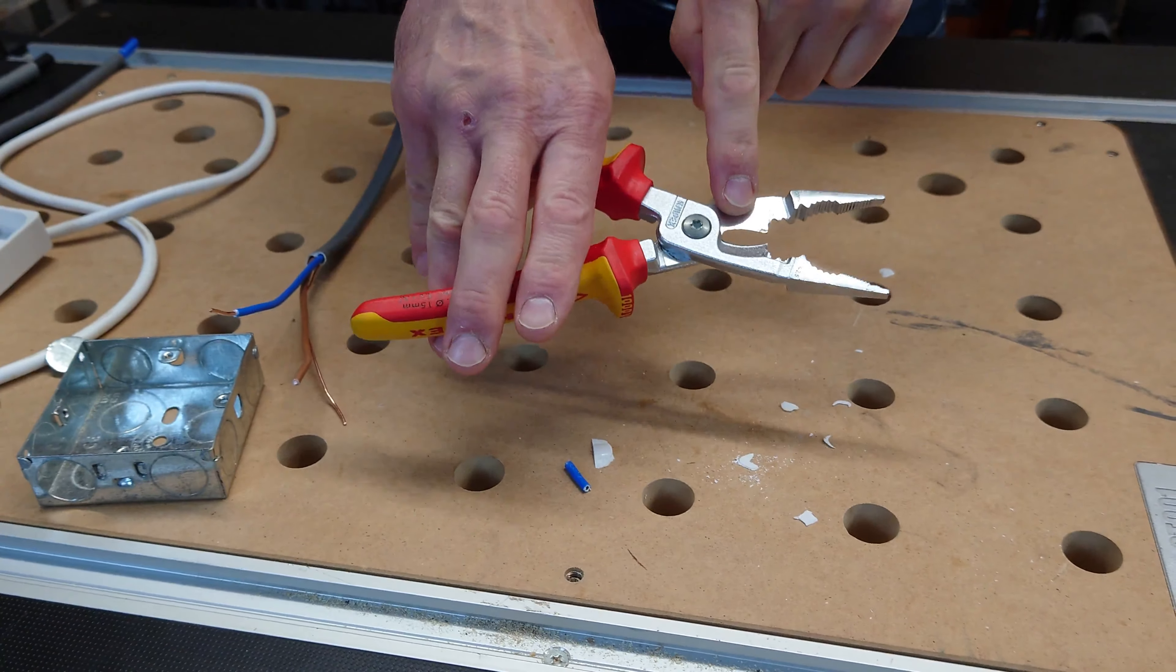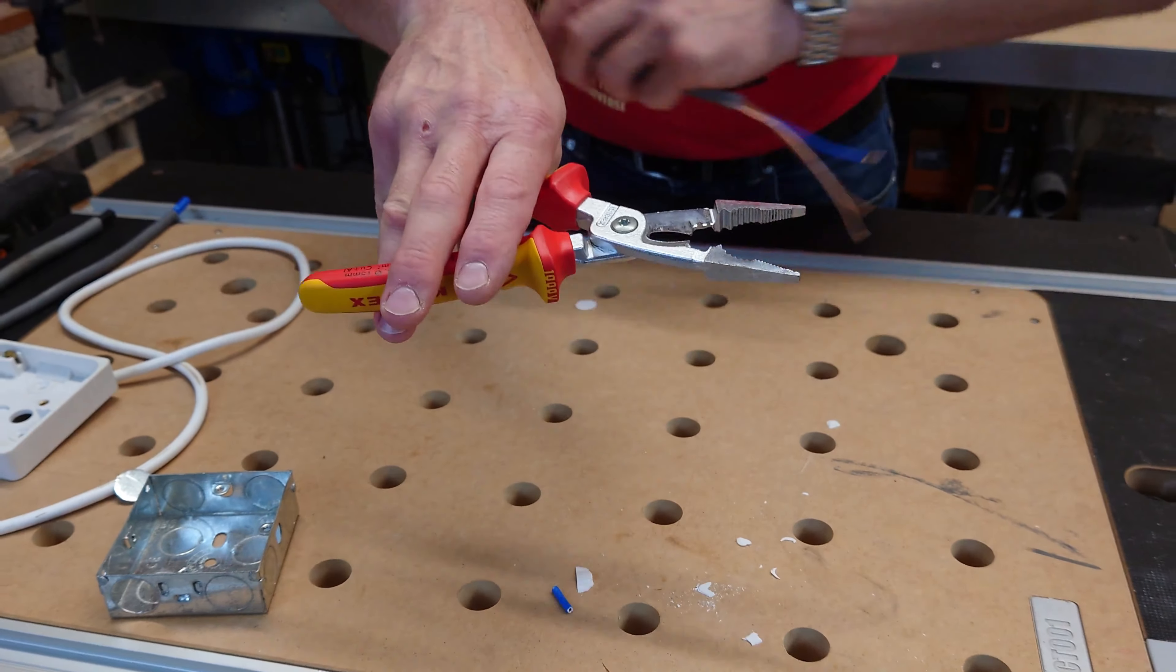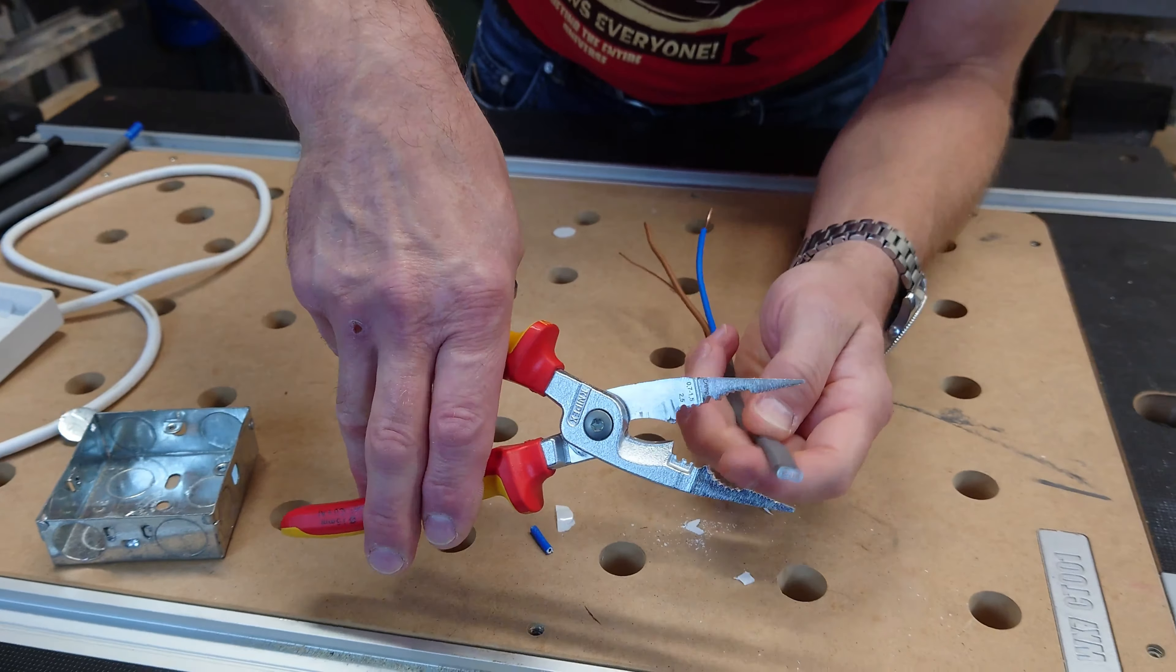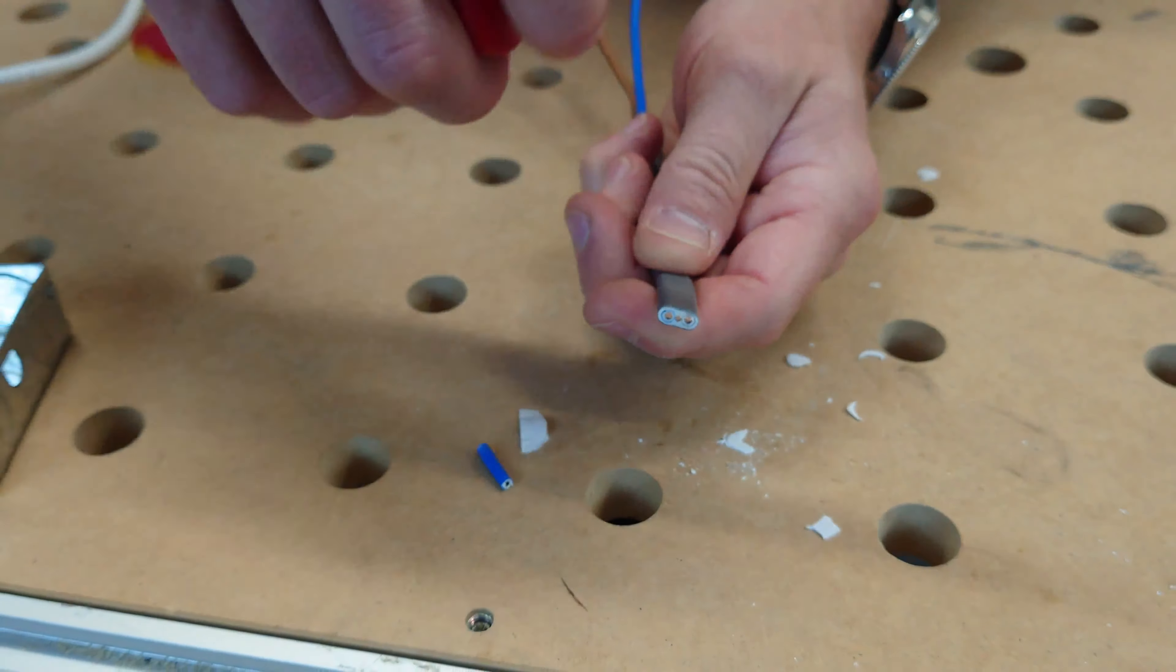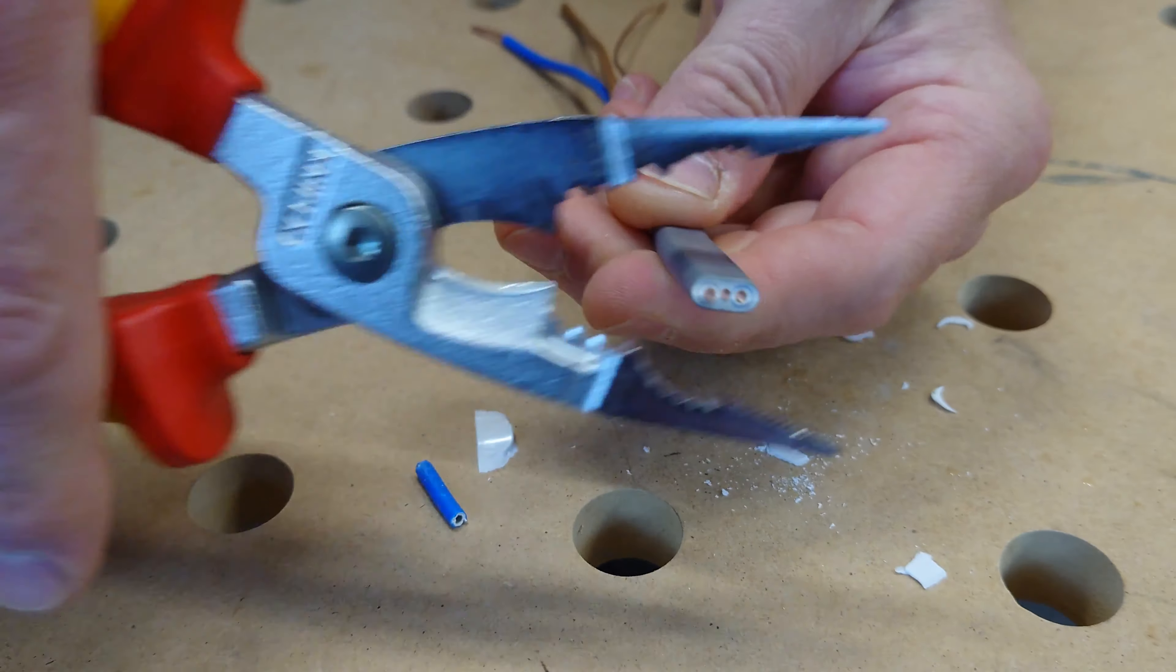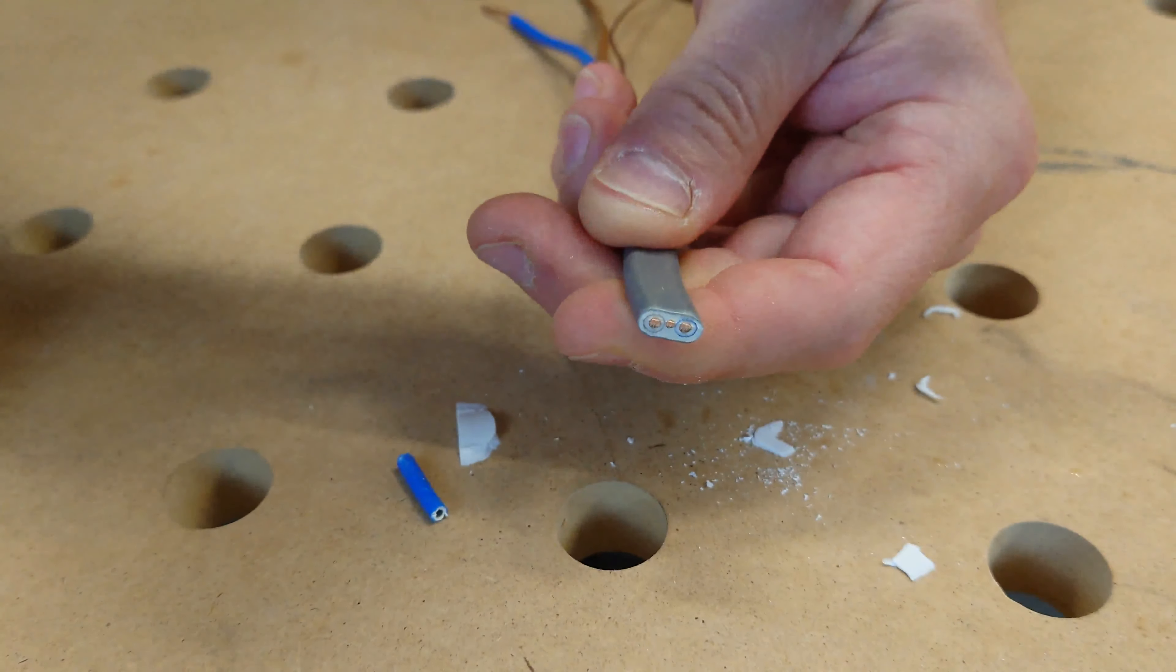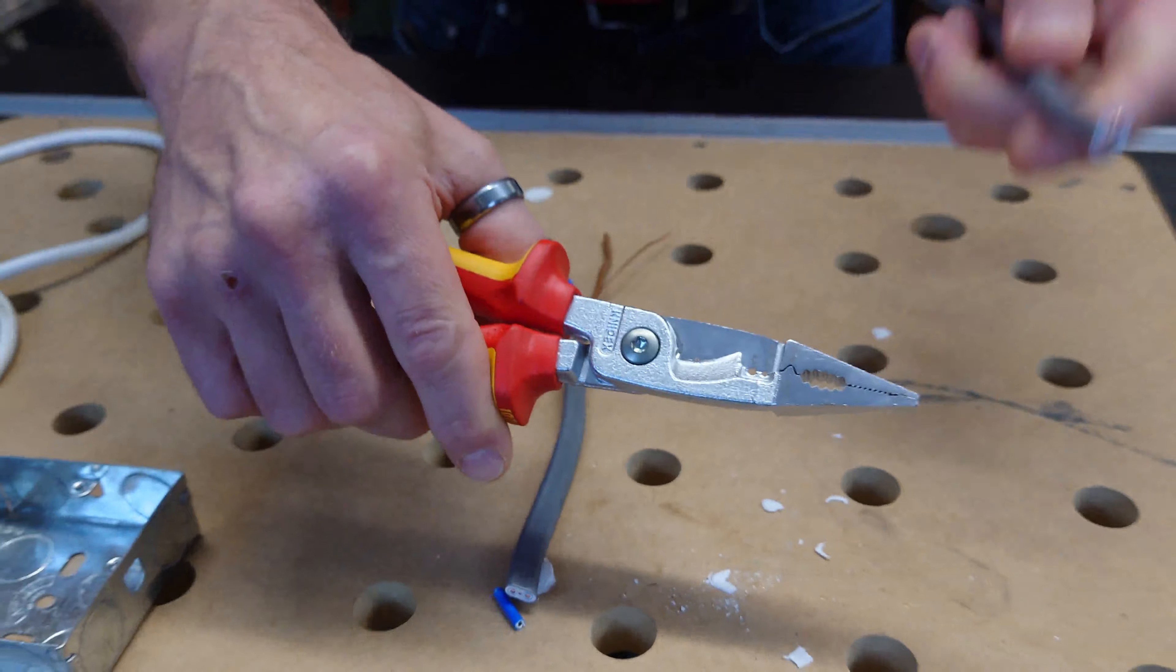These jaws are fantastic. They're nice and big, and they've got that curve to it, which means when you need to cut your cable, very simple, but there's no crushing to the insulation whatsoever.